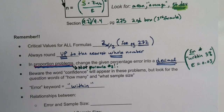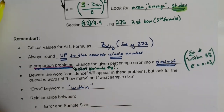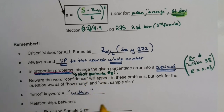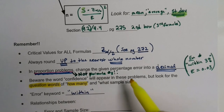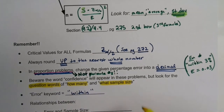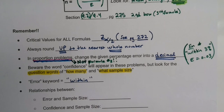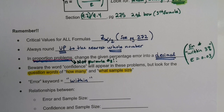Confidence will appear in all of these problems because it's needed to find the z α/2 critical value. But the presence of a confidence level alone doesn't tell you which type of question it is. You have to look for the question words: 'how many?' or 'what sample size?' means it's a sample size question. If it says 'construct the confidence interval,' that's a confidence interval problem. Read these problems very carefully and use highlighters or colored markers to identify the question words and given information.